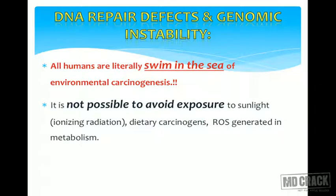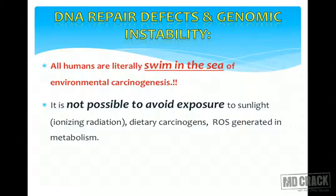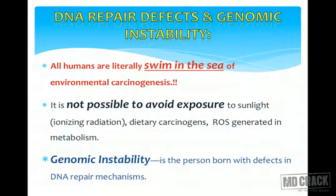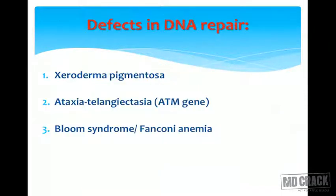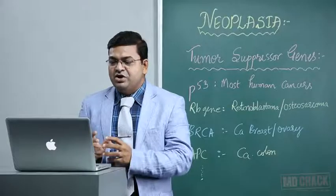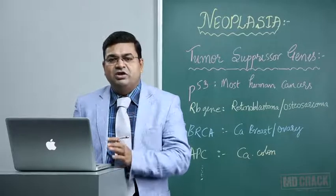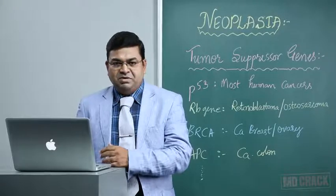We humans are literally swimming in a sea of environmental carcinogens — sunlight, ionizing radiation, dietary carcinogens — and without our knowledge we keep on ingesting and exposing ourselves to so many carcinogenic agents. Even reactive oxygen species generated as a byproduct of our metabolism are carcinogenic in nature. We have a DNA repair mechanism to counter this, but if that itself is defective, it results in genomic instability. Persons born with a defective DNA repair mechanism are very prone to developing multiple malignancies, as happens in xeroderma pigmentosum, where patients are prone to squamous cell carcinomas, basal cell carcinomas, and melanomas at a very young age.